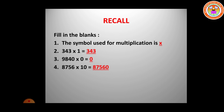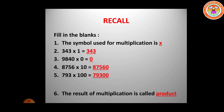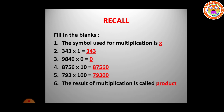When we multiply by ten, one zero is added at the last of the given number. Seven hundred and ninety-three multiplied by one hundred — when we multiply by hundred, two zeros are added at the last, giving seventy-nine thousand three hundred. The result of multiplication is called product.